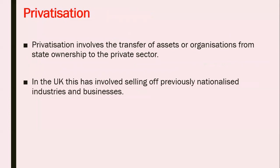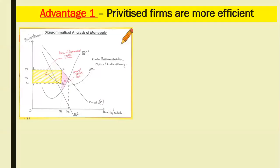Privatisation involves the transfer of assets or organisations from state ownership to the private sector. A recent example would be the Royal Mail. The Royal Mail was once a government-owned organisation, and then about eight or nine years ago, they were sold to private shareholders. Royal Mail now is actually a private company — it was once owned by the state but is now owned by private shareholders. In the UK, this has involved selling off previously nationalised industries and businesses.